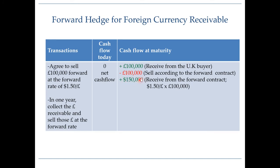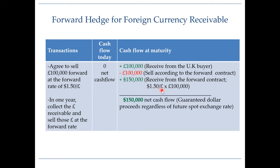In one year's time you will receive 100,000 pounds from the UK buyer, then sell those 100,000 pounds for dollars and receive $150,000, since the forward rate is $1.50 per pound. So the net cash flow in one year's time is $150,000 — your guaranteed dollar proceeds regardless of the future spot exchange rate. It no longer matters whether the future spot rate is $1.30, $1.40, $1.50, or $1.60, because you agreed to sell your 100,000 pounds at $1.50 each. You have essentially locked in the dollar proceeds from this foreign currency sale and are no longer subject to exchange rate risk.